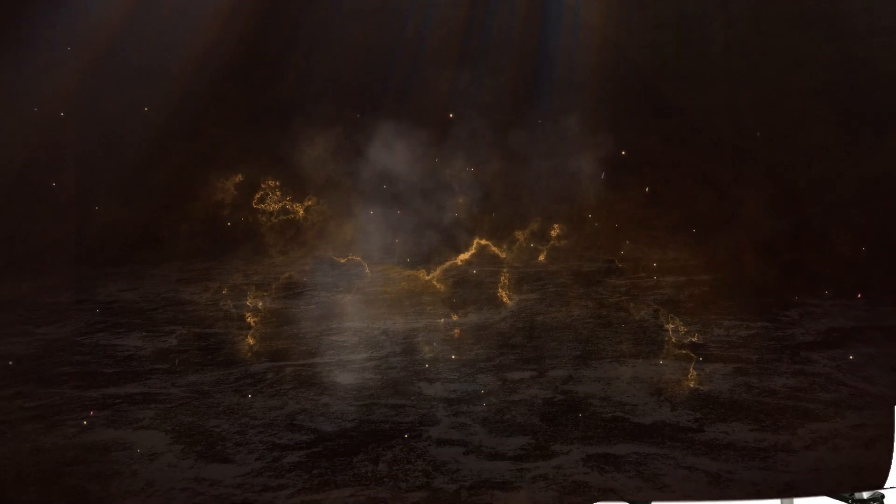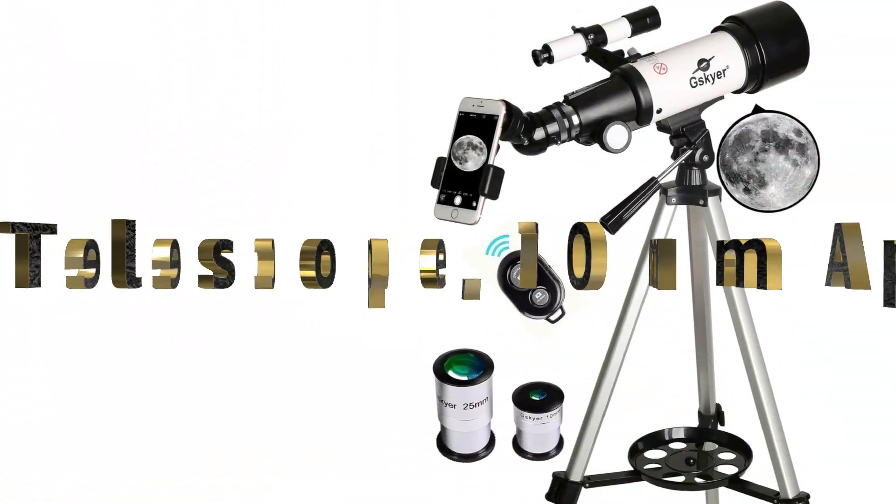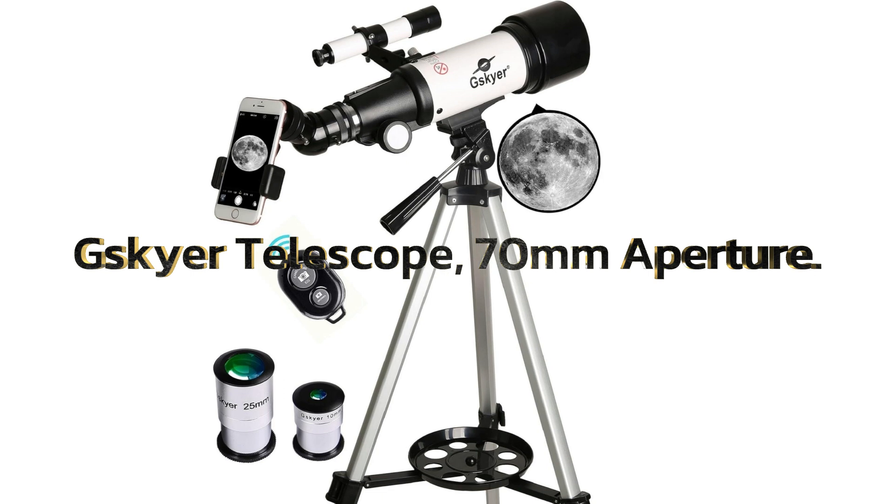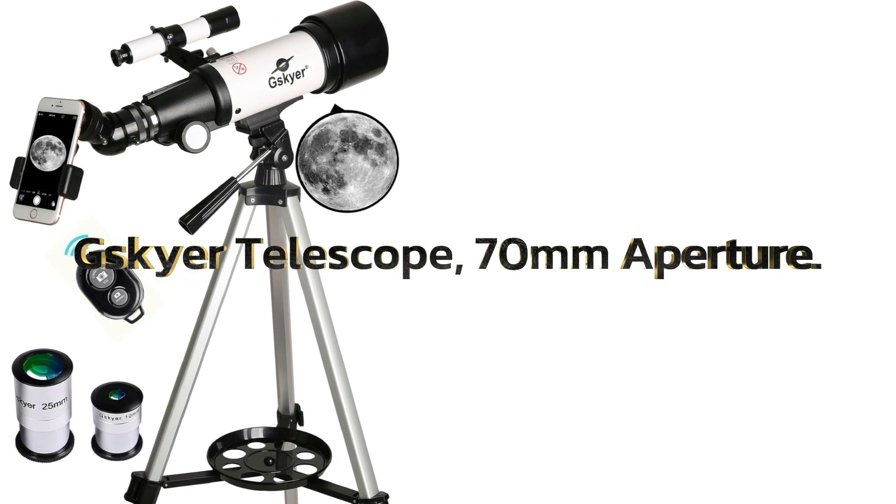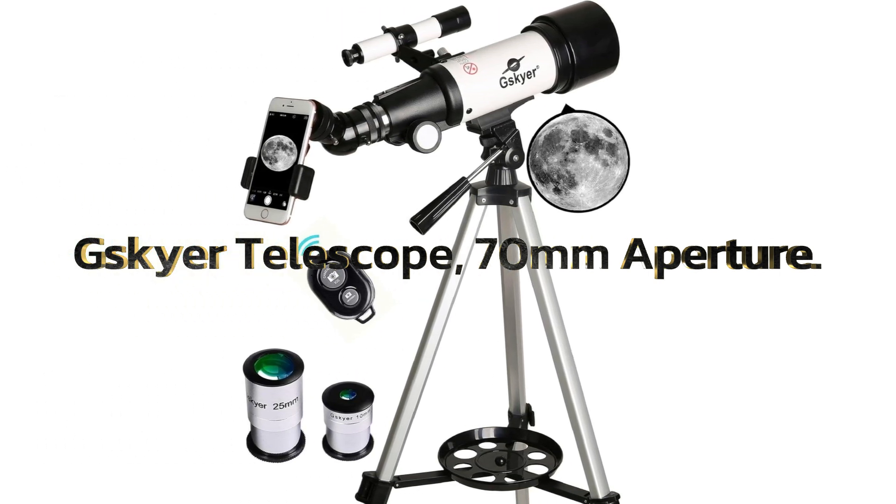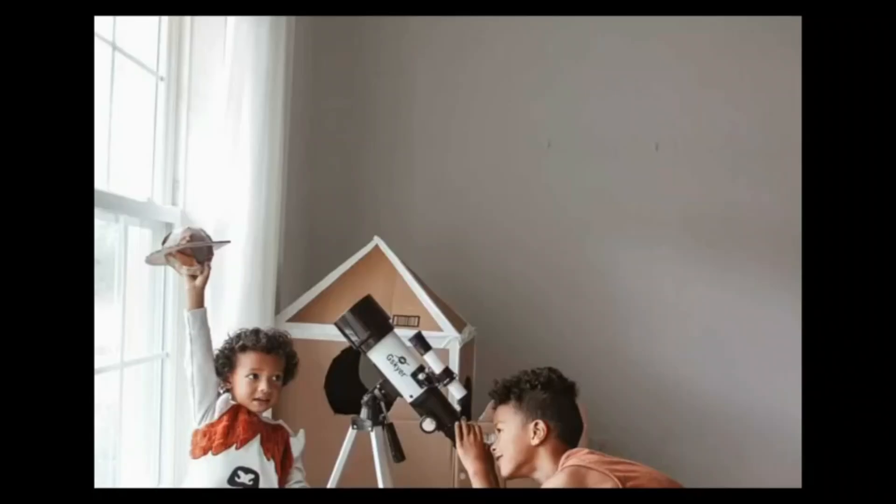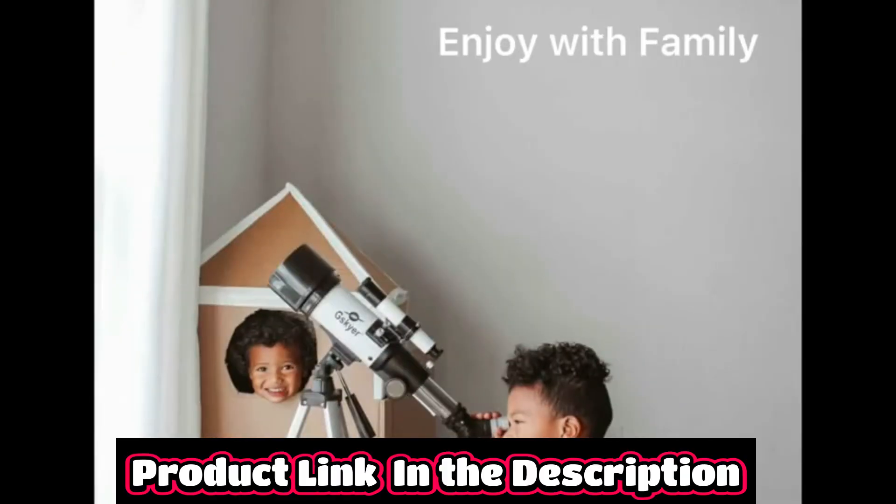Number 1. Skyer Telescope, 70mm Aperture, 400mm AZ Mount Astronomical Refracting Telescope for kids beginners, travel telescope with carry bag, phone adapter, and wireless remote.